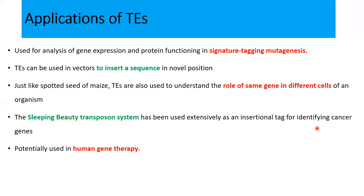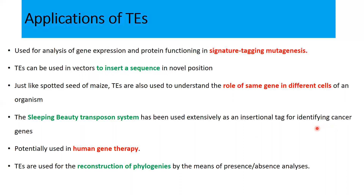Transposable elements are also potential candidates for understanding human gene therapy. Additionally, they are used for reconstruction of phylogenetic relationships — meaning how ancestral organisms are linked to their descendants. Organisms can be related or differentiated based on the presence or absence of certain transposable elements.